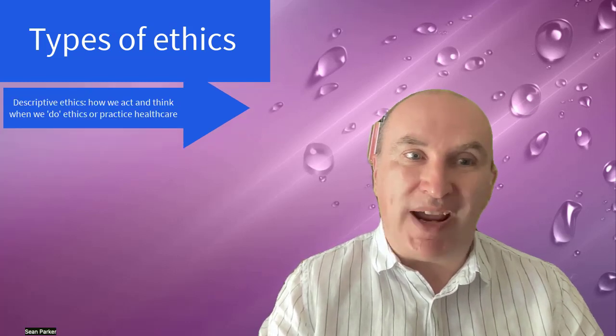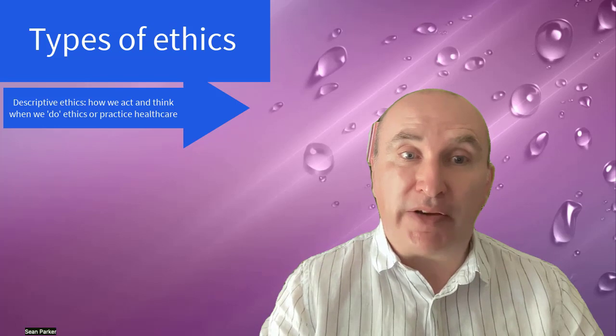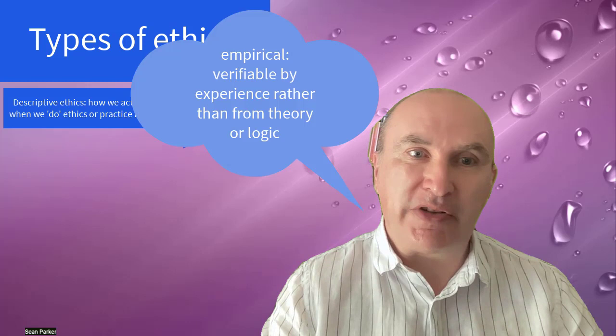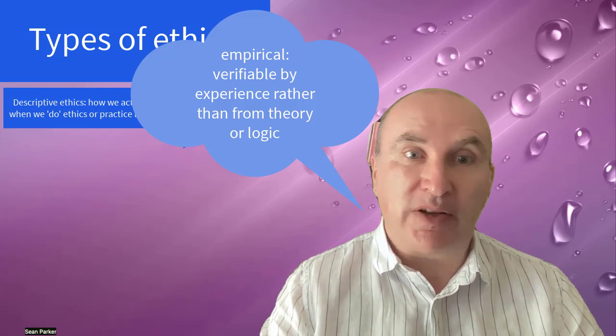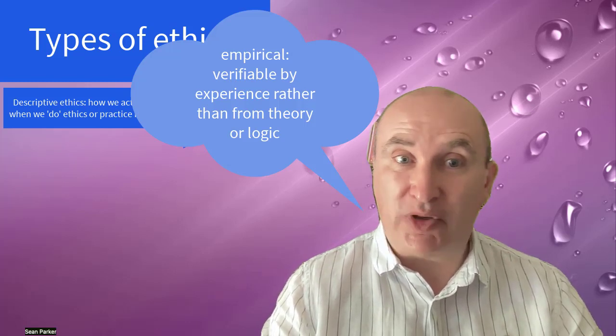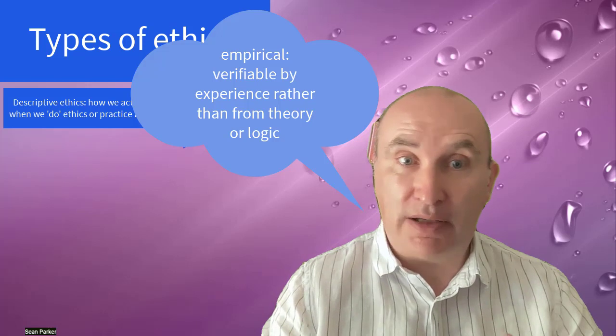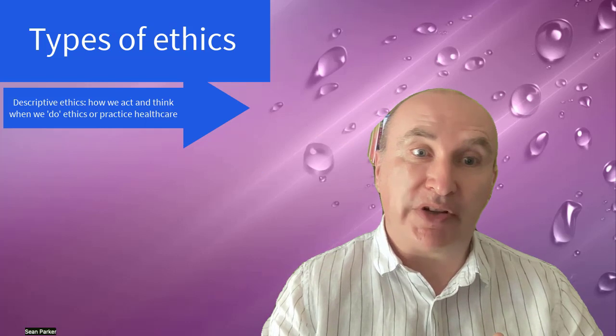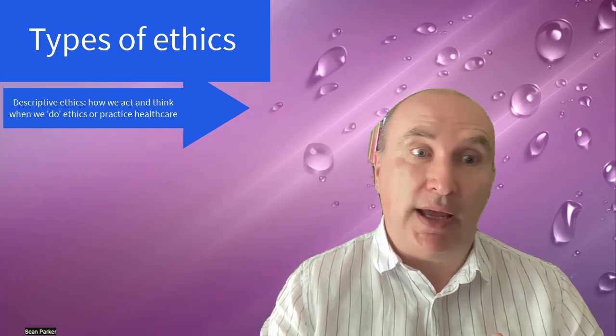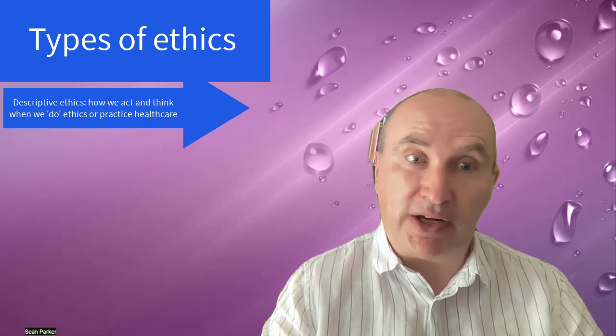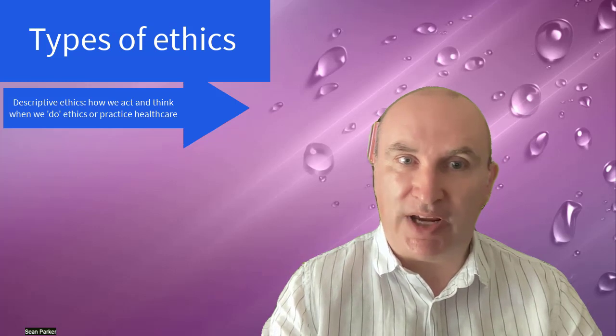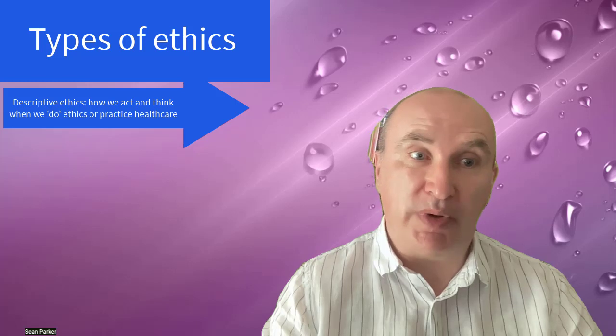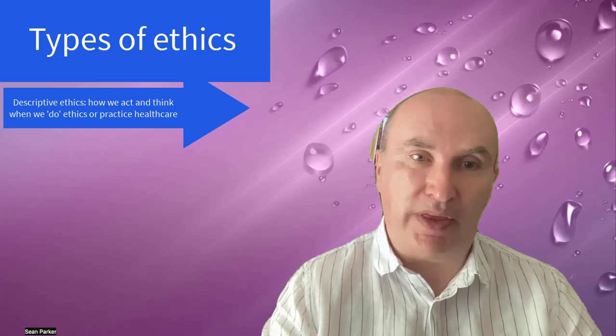Descriptive ethics is about what we actually do, the topic of ethics that we practice. This is what we call empirically based, which means that it's about evidence. Surprisingly, we won't look greatly at descriptive ethics in this subject. It's mainly the province of social sciences. You'll also see it in nursing research, like studies on nursing attitudes towards end-of-life issues, for example. That would be an example of nursing ethics and descriptive ethics, about what we do, what we think.